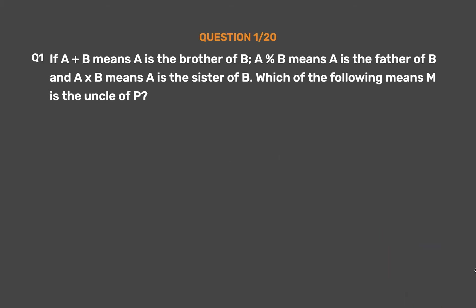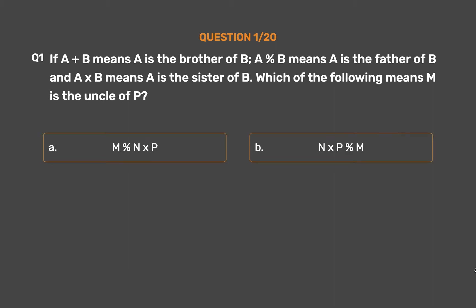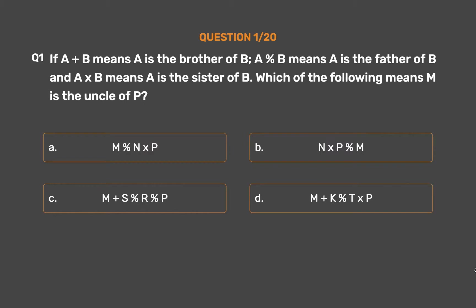Question number 1. If A + B means A is the brother of B, A % B means A is the father of B, and A × B means A is the sister of B, which of the following means M is the uncle of P? Option A: M % N × P. Option B: N × P % M. Option C: M + S % R % P. Option D: M + K % T × P.